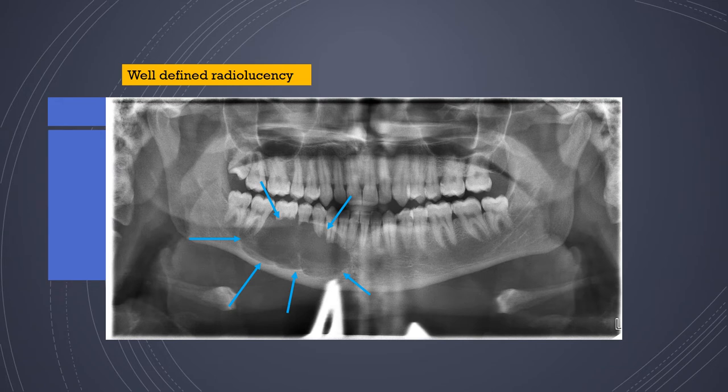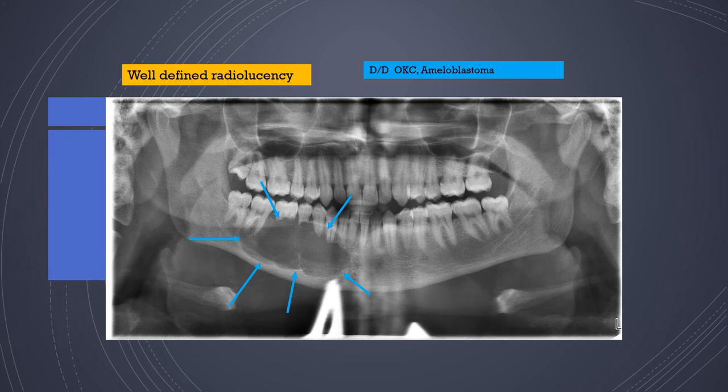Here are more well-defined radiolucencies. This large radiolucency is nearly 6×3 cm in size with a scalloped appearance and multiple locules. The borders have caused resorption of adjacent teeth. This would definitely be an OKC or an ameloblastoma. It is very important to assess how close it is to the mandibular canal — and in this case, the mandibular canal is involved.